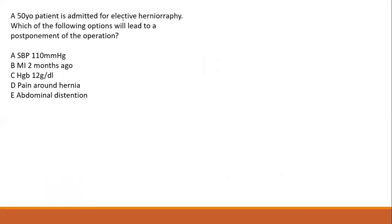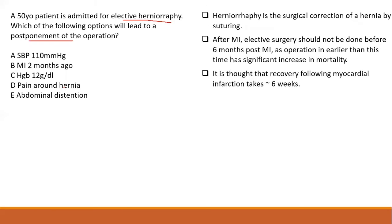A 50-year-old patient is admitted for elective herniography. Which of the following will lead to postponement of the operation? If a patient has had a myocardial infarction, you do not perform elective surgery within six months post-MI. Surgery before six months is associated with increased mortality. So the answer is B — MI two months ago — because that is within the six-month window.